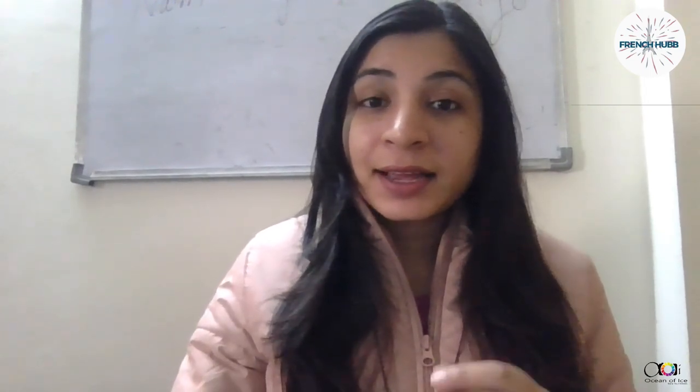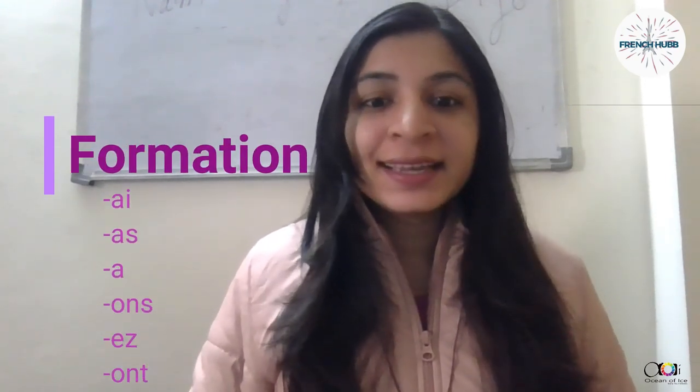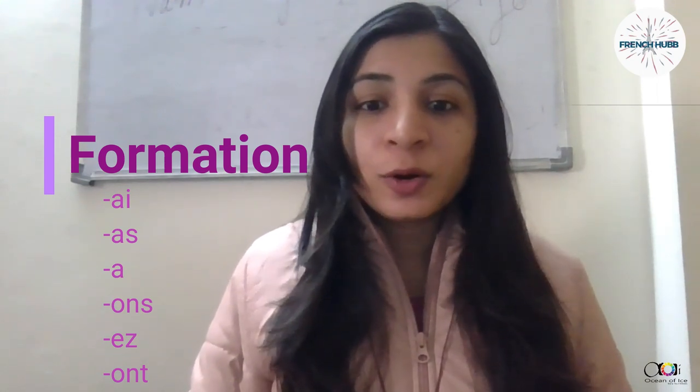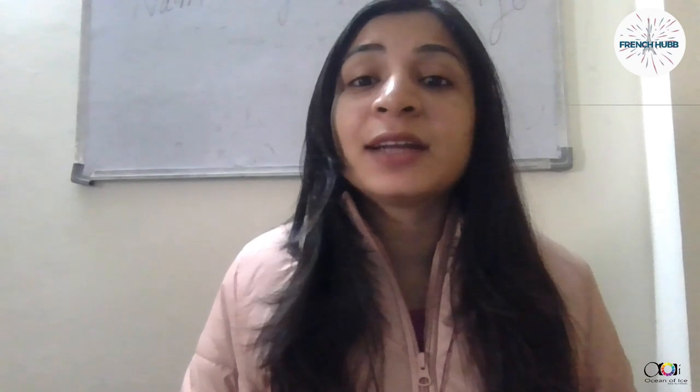The formation of futur simple is very easy — we just have to add a few endings. Those endings are: -ai, -as, -a, -ons, -ez, -ont. We are familiar with these endings because they are the conjugations of the verb 'avoir.'